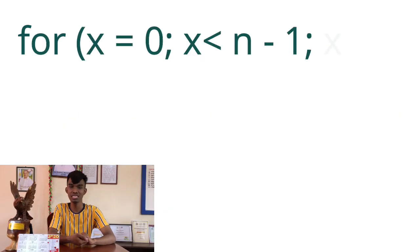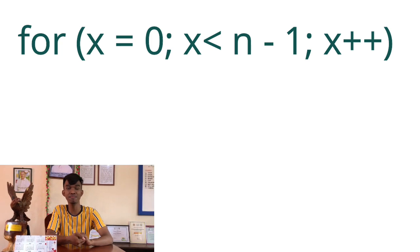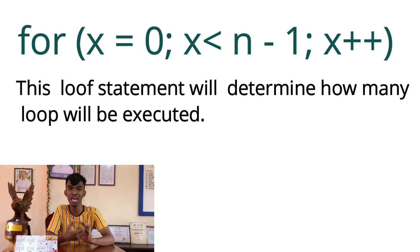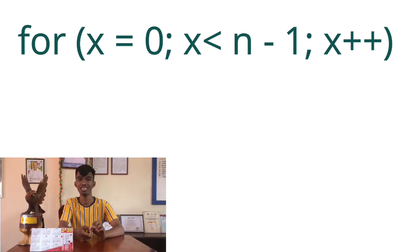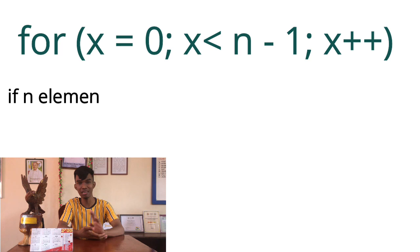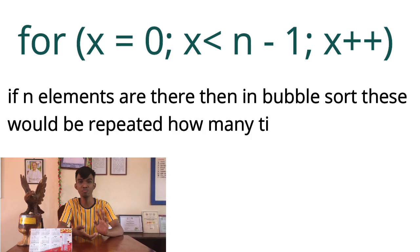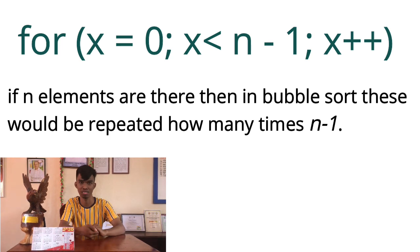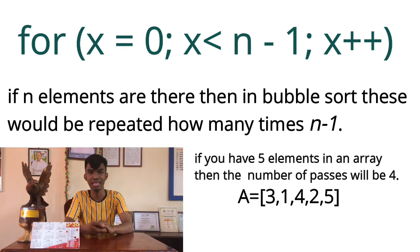For x = 0; x < n - 1; x++: this loop statement will determine how many loops will be executed. In the general case, if there are n elements, then in bubble sort this loop is repeated n minus 1 times. If you have 5 elements in an array, the number of passes will be 4.